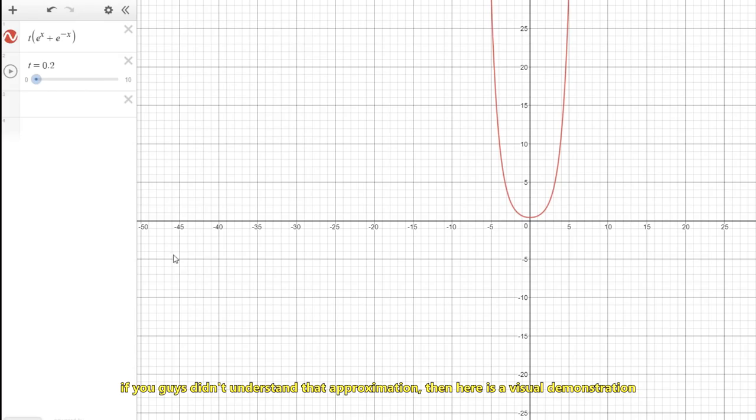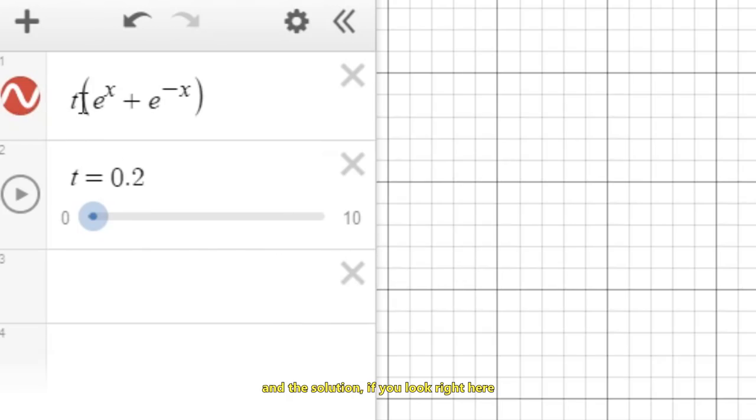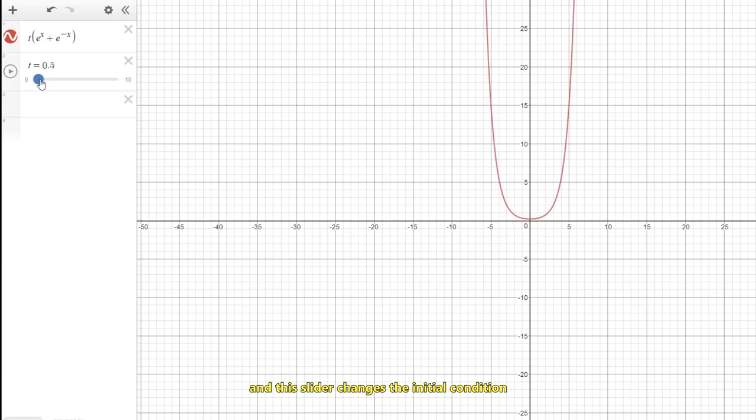If you guys didn't understand that approximation, here's a visual demonstration. So what we have plugged in is the position function with respect to time. So the x-axis is the time variable. And the vertical axis is the position of the rope relative to the table. And the solution, if you look right here, has an initial condition that is outside the equation. And the slider changes the initial condition.